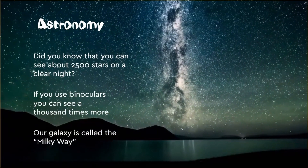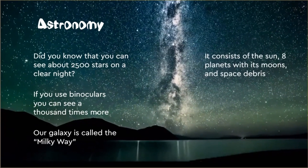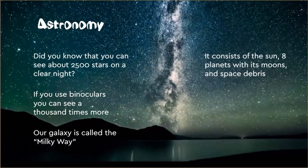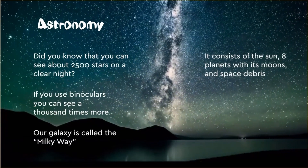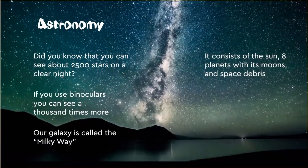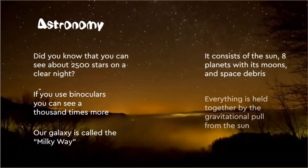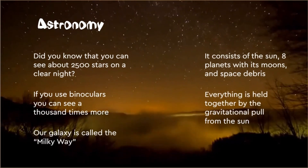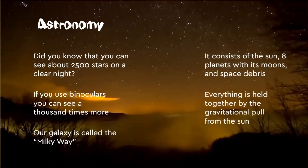The Milky Way consists of the sun, eight planets and their moons, as well as space debris. Everything is held together by the gravitational pull from the sun.